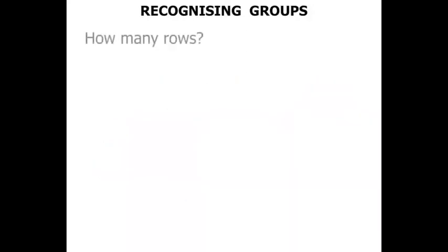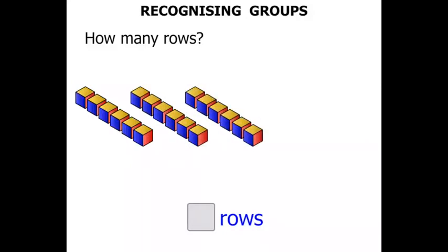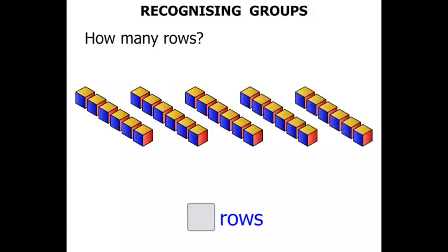How many rows? Let's write our answer down here. One row of blocks. Two rows of blocks. Three rows of blocks. Four rows of blocks. Five rows of blocks. We've got five rows.